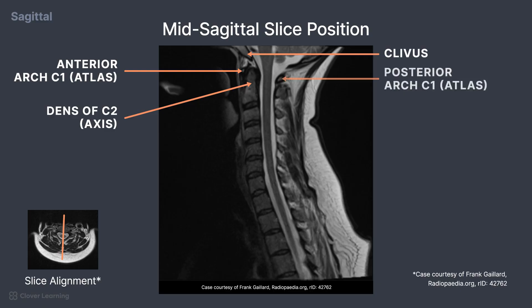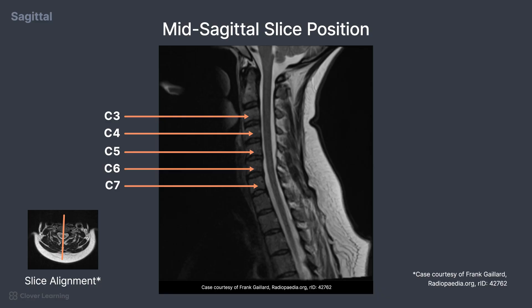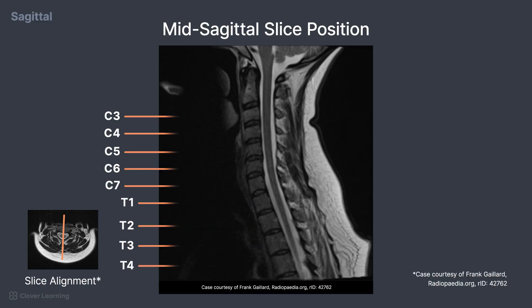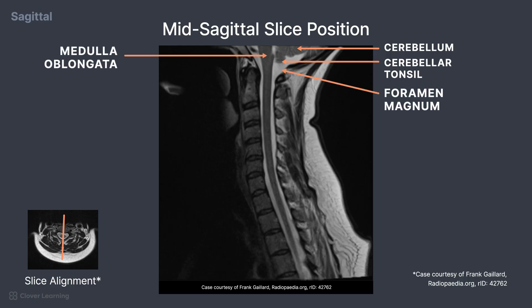The anterior arch and posterior arch of C1 are visible. It is important to be familiar with how to properly count the vertebrae. The tall portion of the dens is the indication that the largest vertebra visible is C2. C1 is called the atlas and C2 is called the axis. Counting inferiorly on this image, we can see C3, 4, 5, 6, and 7, the disk space between C7 and T1, continuing down to T2, 3, and 4. The cerebellum and cerebellar tonsils are visible on the superior portion of the image, around the foramen magnum. The inferior portion of the medulla oblongata is also demonstrated, which then extends into the spinal cord going down the spinal canal.